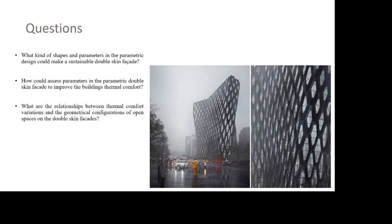Now the research questions are: what kind of shapes and parameters in the parametric design could make a sustainable double skin facade? How could we access parameters in the parametric double skin facade to improve the building's thermal comfort? And what are the relationships between thermal comfort variation and the geometrical configurations of open spaces on the second skin facades?